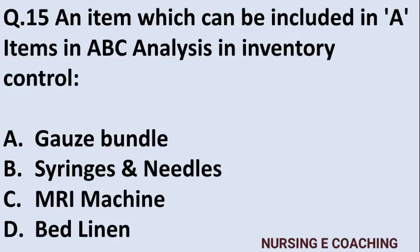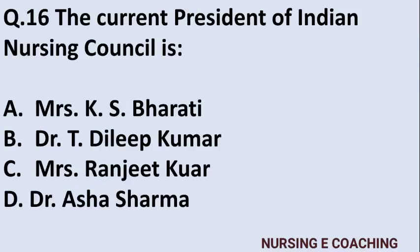Question 15: An item which can be included as an A item in ABC analysis in inventory control — Option A: gauze bundle, Option B: syringes and needles, Option C: MRI machines, Option D: bed linen. Answer is C — MRI machines, as A items are high-value items in ABC inventory analysis.